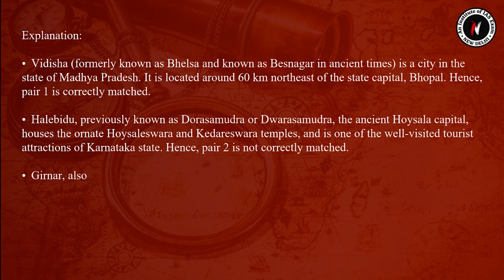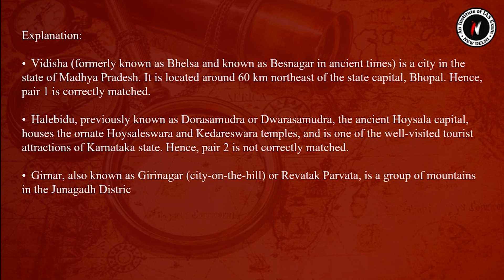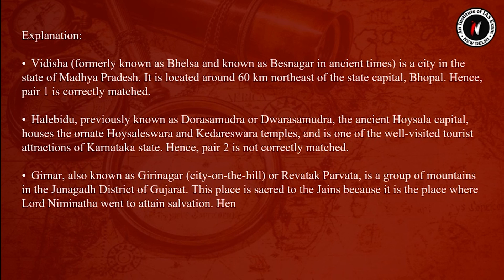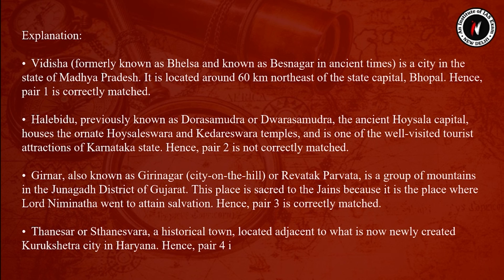Girnar, also known as Girinagar or Revatak Parvat, is a group of mountains in the Junagadh district of Gujarat, sacred to the Jains as the place where Lord Neminatha attained salvation — hence pair 3 is correctly matched. Thaneshwar or Sthaneshwara is a historical town located adjacent to the newly created Kurukshetra city in Haryana — hence pair 4 is not correctly matched.